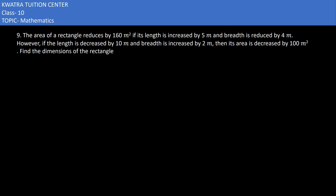We are starting with the ninth question; in the last video we did the eighth one. It says the area of a rectangle reduces by 160 square meters if the length is increased by 5 meters and the breadth is reduced by 4 meters. There are two changes: one in length and one in breadth. Let's say the length is x meters and the breadth is y meters.